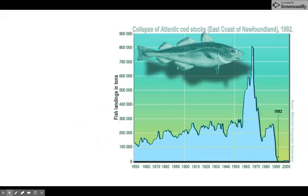Here's another one — the Atlantic cod stocks, east coast of Newfoundland, 1992, when the fisheries collapsed. This was the catch, then all of a sudden they caught this many — now look what happens. And the fishermen still sometimes say, 'why can't we go out and fish anymore? Why did the government ban fishing?'